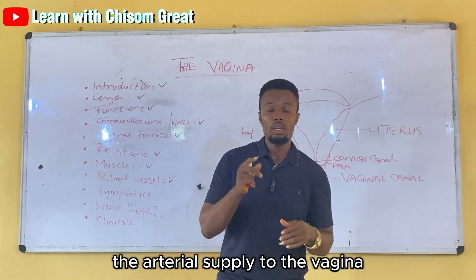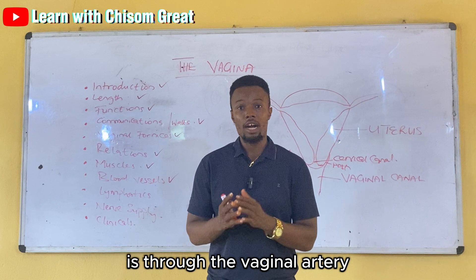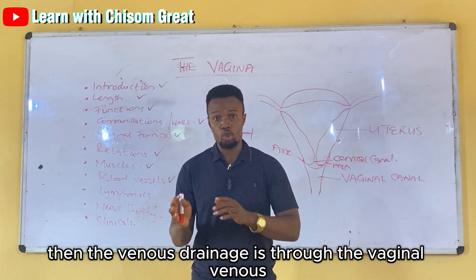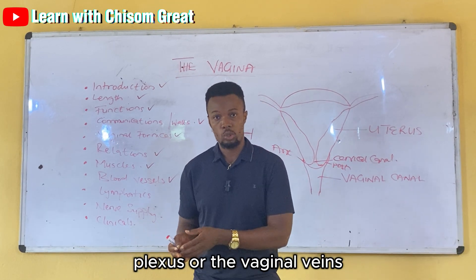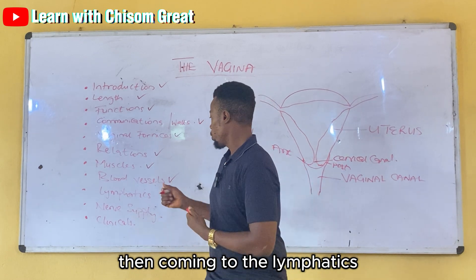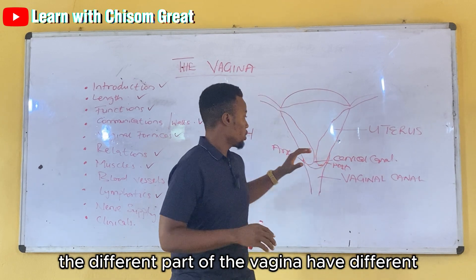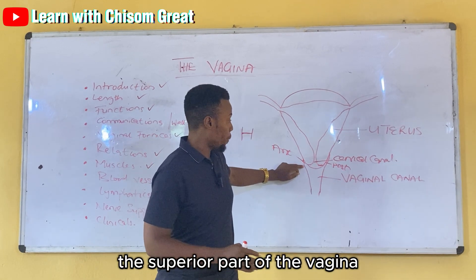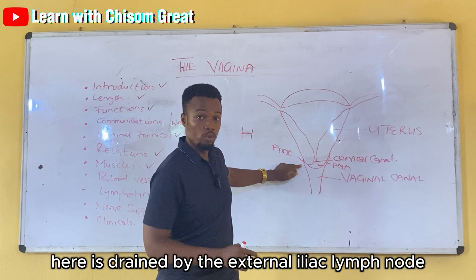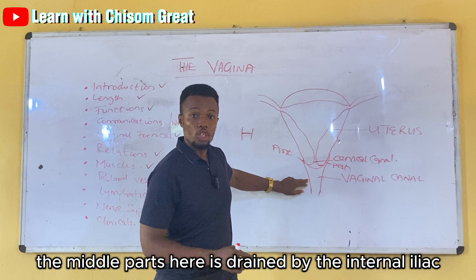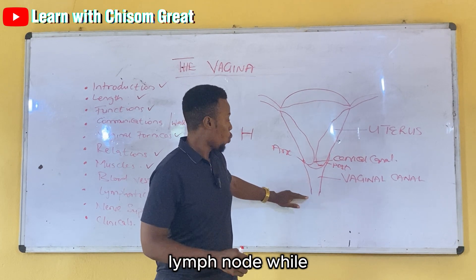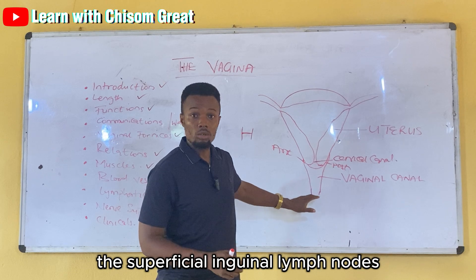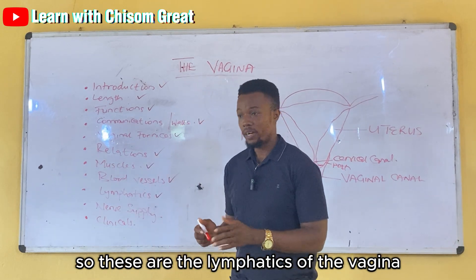The arterial supply to the vagina is through the vaginal artery, the uterine artery, and also the pudendal artery. The venous drainage is through the vaginal venous plexus or the vaginal veins. For lymphatics, the superior part of the vagina is drained by the external iliac lymph node, the middle part by the internal iliac lymph node, and the inferior part by the superficial inguinal lymph node.